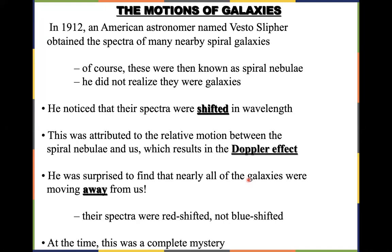The spectra were red shifted, which indicates the galaxies have shifted to longer wavelengths. This means these particular galaxies are actually moving away from us. This was a complete mystery at that time, because gravity is an attractive force — so one would expect galaxies to move towards us. But instead, what they observed was that the galaxies are actually moving away from us based on their spectra.